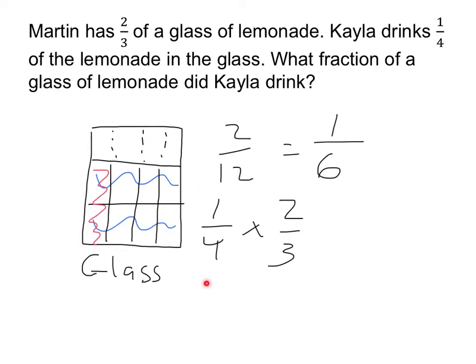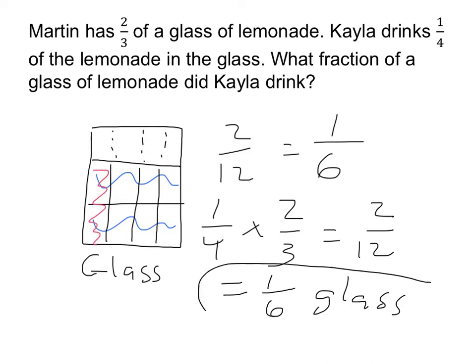Mathematically, we calculate one-fourth times two-thirds. We get two-twelfths, which simplifies down to one-sixth of a glass. There's our answer.